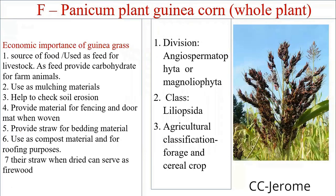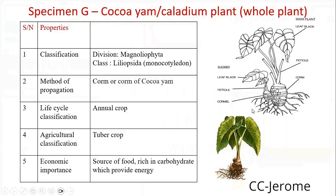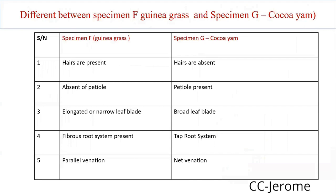Panic corn plants — I choose guinea grass. It's a source of food, used for mulching, and provides straw for bedding materials. Look at the slide and identify. The agricultural classification is forage crop or cereals. The pictorial view you can see. Cocoyam — the method of propagation is by corm or comb of cocoyam. The type of life cycle classification is annual crop. Agricultural classification is a tuber crop. Economic importance: source of food. This is the pictorial view. Differences between guinea grass and cocoyam: hairs are present versus hairs are absent, elongated and narrow. Look at the screen and identify their differences.